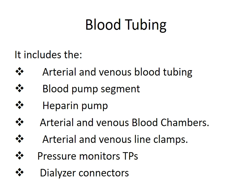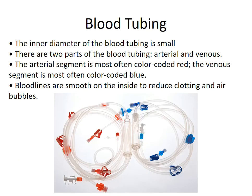The blood tubing includes the arterial and venous blood tubing segments, the blood pump segment, heparin pump, arterial and venous blood chambers, arterial and venous line clamps, pressure monitors, transducer protectors, and dialyzer connectors. The arterial segment is color-coded red and the venous segment is color-coded blue. The inner diameter of the blood tubing is small. The blood line should be smooth on the inside to reduce clotting and air bubbles.